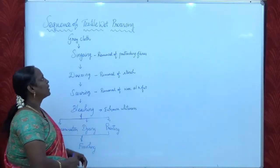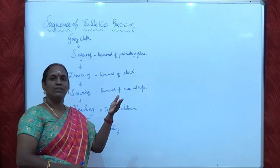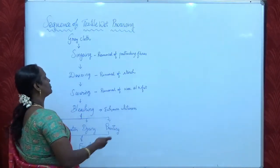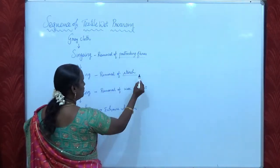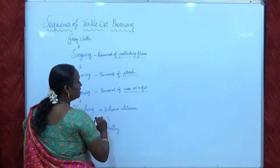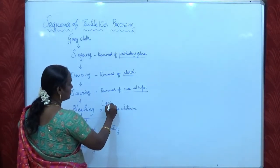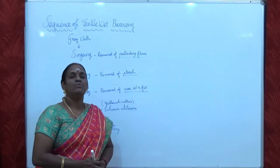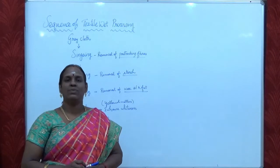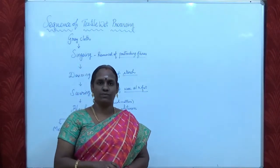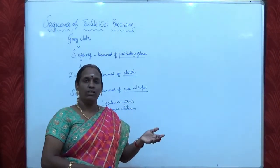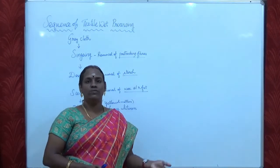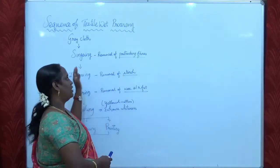Gray cloth means the cotton fabric which is obtained from the loom state. The gray cloth contains lots of impurities including protein fibers, starch, wax, oil, fat, and also some yellowish matters on its surface. The absorbency of the gray cloth is very less and it feels rough. To make the gray cloth soft and to make its appearance white and usable for the stitching process, several processes are carried out.